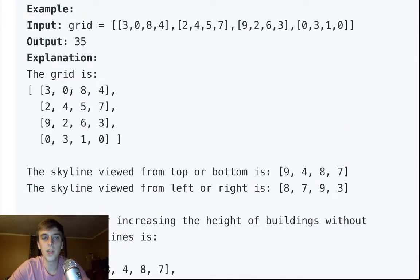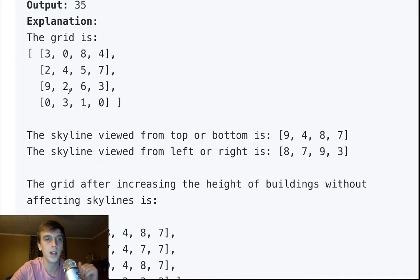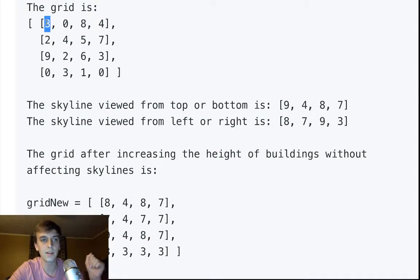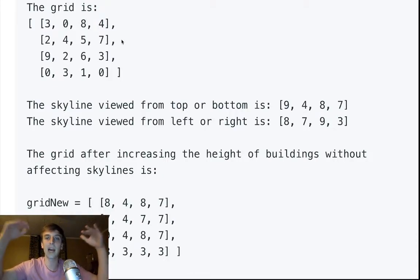But for any value that isn't the maximum row or column value, we want to increase those as much as we can. We just cannot go past the highest value in each row and the highest value in each column. So we can increase this 3 to an 8 because the maximum column is 9 and the maximum row is 8. So as long as we don't go above 9 or 8, we can increase it to 8. We cannot go above the minimum of the column or the row value.